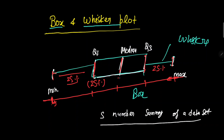The median divides our data set into two parts — 50 percent of the data set lies above the median and 50 percent lies below the median. This means 25 percent is in each section, so between each vertical line we have approximately 25 percent of the data.